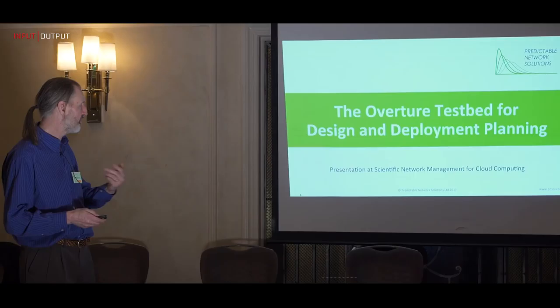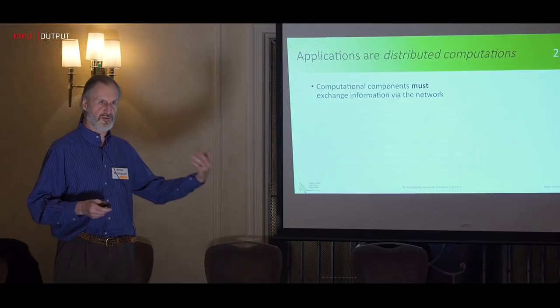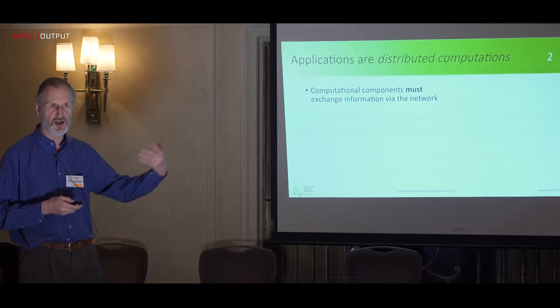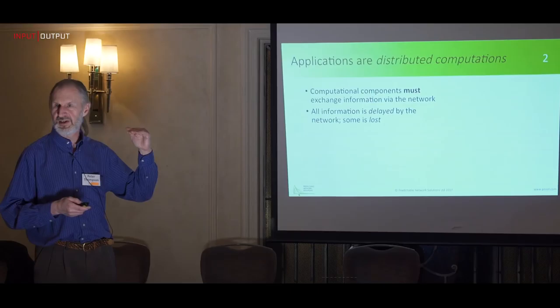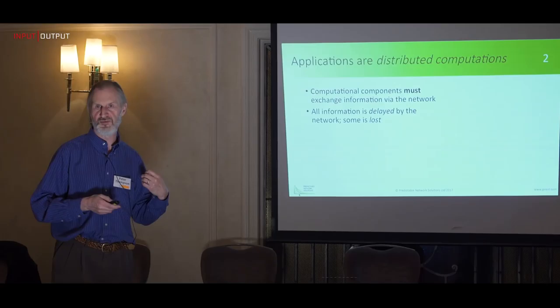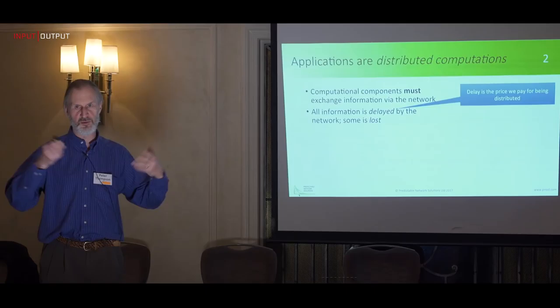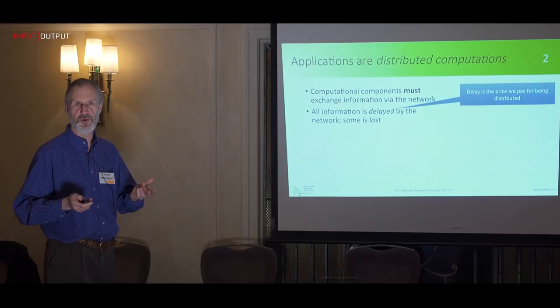Just to recap: applications are distributed computations. If you're not just running something locally on your own PC or phone, it involves exchanging information across the network. Components of your application — typically a client and a server, but there could be more — have to exchange information. All information is delayed by the network; this is the notion of network friction that Martin talked about at the beginning. We can't eliminate it altogether; at the very least we have to be concerned about the speed of light. Delay is the price we pay for being distributed — we decided it was nice to build applications with one part in the data center and another part on a phone or PC.